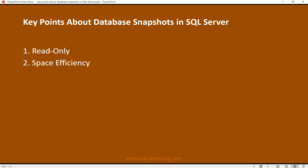Number two: space efficiency. Database snapshots initially consume very little disk space because they only store pages that have been modified since the snapshot was created. As changes occur in the source database, these modified pages are copied to the snapshot. This copy-on-write mechanism ensures that the snapshot remains space efficient.